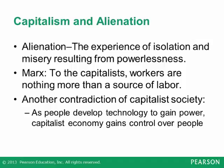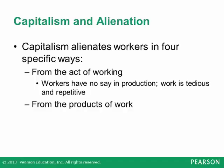Weber compared societies in different times and places, relying on the ideal type — an abstract statement of the essential characteristics of any social phenomenon. We might speak of the pre-industrial society and the industrial society as ideal types. The use of the word 'ideal' does not mean that one or the other is good or best, nor does an ideal type refer to any actual society. Rather, think of an ideal type as a way of defining a type of society in its pure form. We have already used the ideal type in comparing hunting and gathering societies with industrial societies and capitalism with socialism.